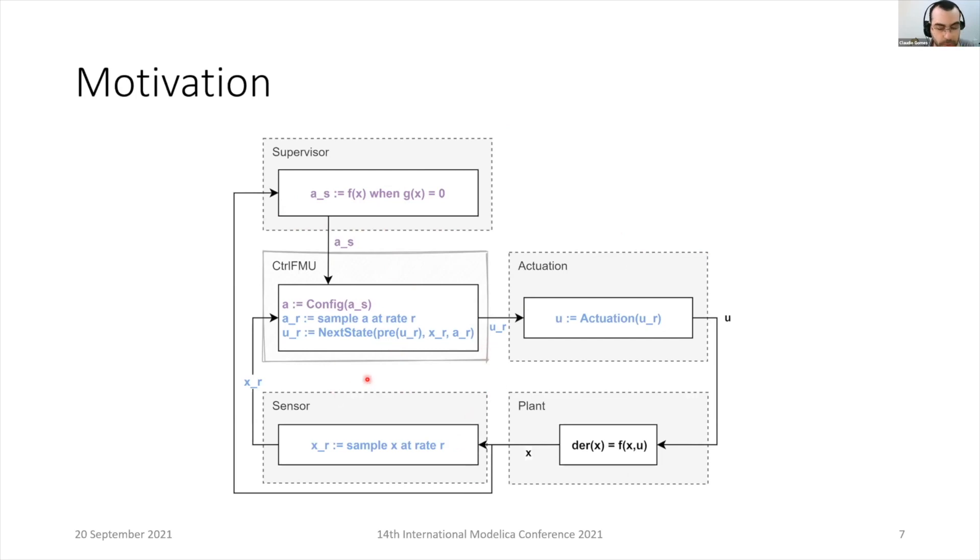There are different ways to execute this simulation using FMI 2.0 or 2.1. If the importer is the entity that controls this rate R and controls the exact timing of this rate,